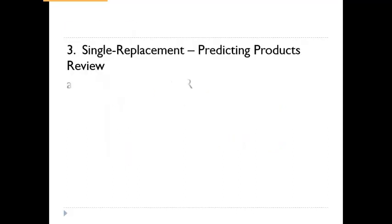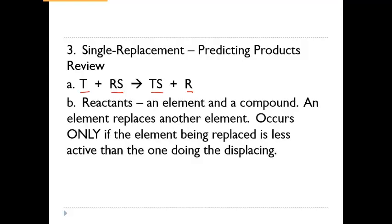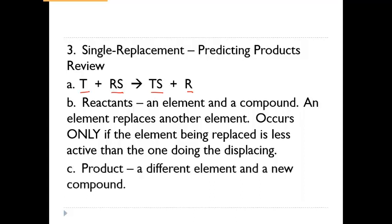Quick recap of single replacement: we have a single element by itself and a compound, and on the other side we're going to have a compound and a single element. That's how you can tell by looking at an equation whether it's single replacement — an element and a compound on both sides. You have to be careful because there are times when the reaction will not occur. It's only going to replace the other element if it's more active. We need to look at our activity chart, find which one's more active, and that's the one that should be bonded in the compound. Products should be a different element and a new compound — the same element or compound on both sides would indicate no reaction.